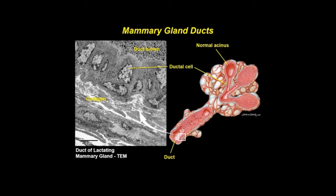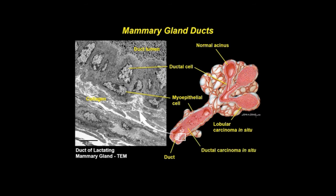Ultrastructure reveals a simple cuboidal epithelium in the smallest ducts closest to the secretory alveoli. Ductal cells have a single central nucleus and a cytoplasm packed with organelles. At the base of the epithelium are stellate-shaped contractile myoepithelial cells, which share a thin basement membrane with the more apical ductal cells. Two forms of breast cancer are depicted to the right: lobular carcinoma in situ and the more common ductal carcinoma in situ. Both are non-invasive neoplasms, limited by the basement membrane, but may become metastatic if left untreated.